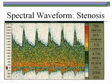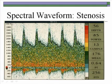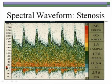A waveform demonstrating stenosis shows baseline high amplitude signals, weaker high velocity signals, and an overall increase in velocity — in this example a mean of 176 cm/s.